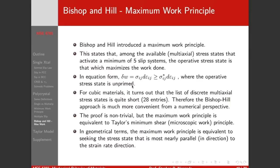So really what Bishop and Hill are saying is that we're looking for the stress state that is parallel with the strain — we want the principal axes of strain in our grain. If that happens, that is going to be the stress state that causes the deformation. The deformation is caused by picking the five slip systems that need the minimum amount of work to get to that deformation, but the stress is chosen as the one, out of all possible stress states, that is closest to parallel with the strain direction.